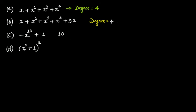The fourth polynomial is x squared plus 1, the whole raised to the power of 2. Some of you might say that since this contains x squared, the degree is 2, but that is wrong.